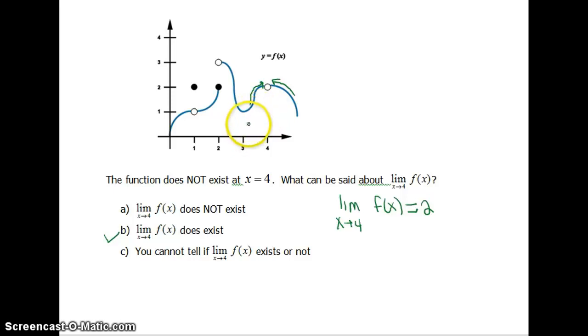So limits can be a little bit confusing in that sense, as they don't always behave like the function, but sometimes they do. So you just have to look at your graph, or at a table, as we're gonna see later on, and just kinda see what's happening to the values, and then that will tell you what's going on.